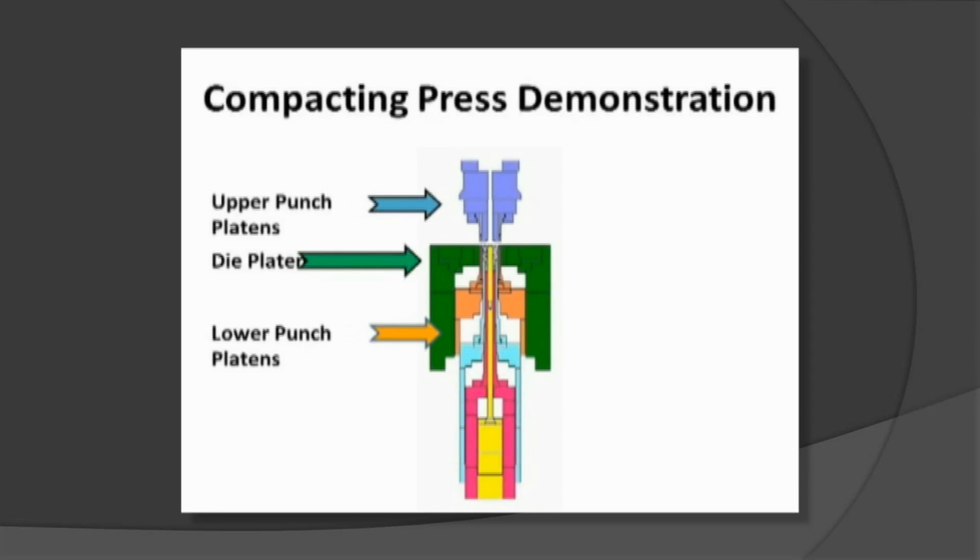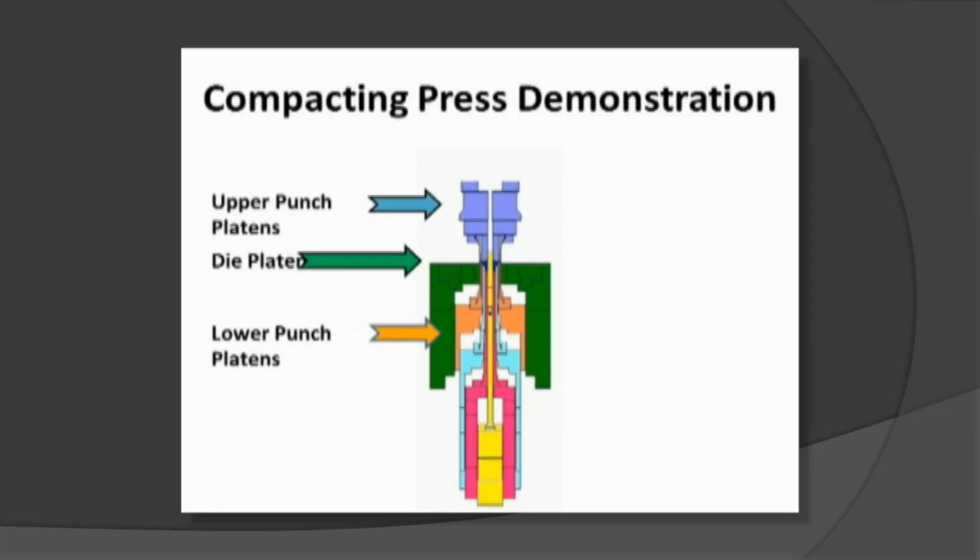Most multi-action presses have at least 2 lower and 2 upper level capabilities. There are also presses with 3 and 4 upper and lower levels. This is an example of a component showing lower punch level 1, lower punch level 2, an upper punch, a die, and a core rod to form the spline ID. This is an example of a compacting demonstration — you can see how the compacting press functions.